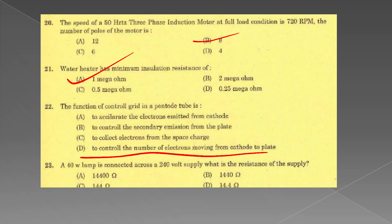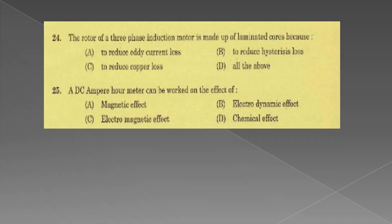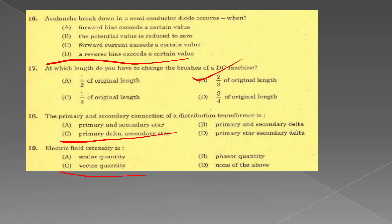A 40 watt lamp is connected across 240 volt supply. What is the resistance of the supply? Power equals V squared by R. This is the value of 1,440 ohm. The rotor of a three-phase induction motor is made up of laminated core to reduce eddy current losses. A DC ampere hour meter works on chemical effect.